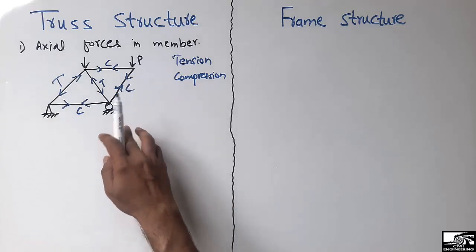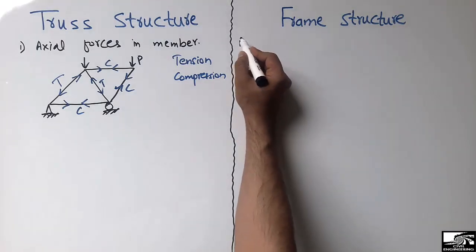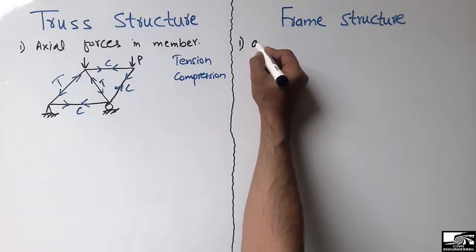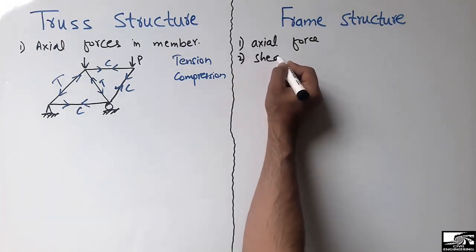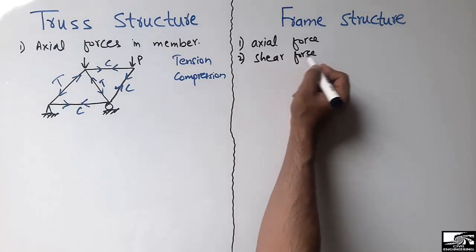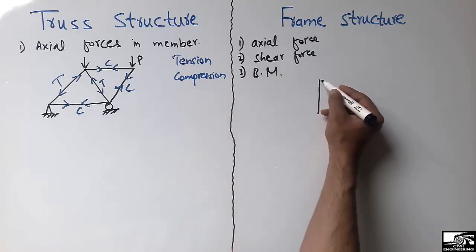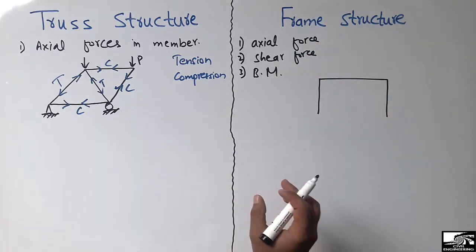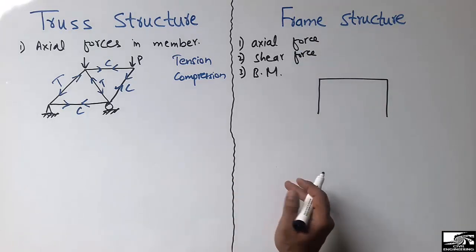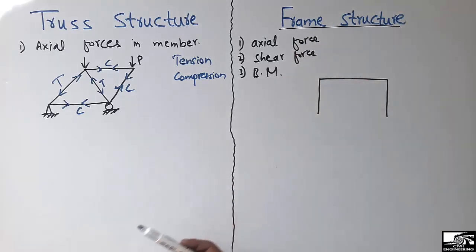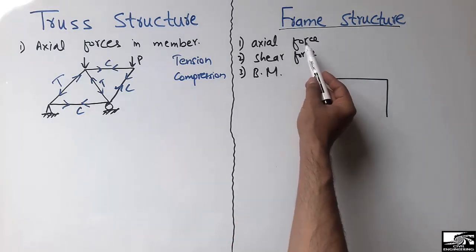If we consider the frame structure, there are three different types of member forces: axial force, shear force, and bending moment. The frame structure is composed of a slab, beam, and column. It may include the footing, but usually the frame structure mainly consists of three components: slab, beam, and column.